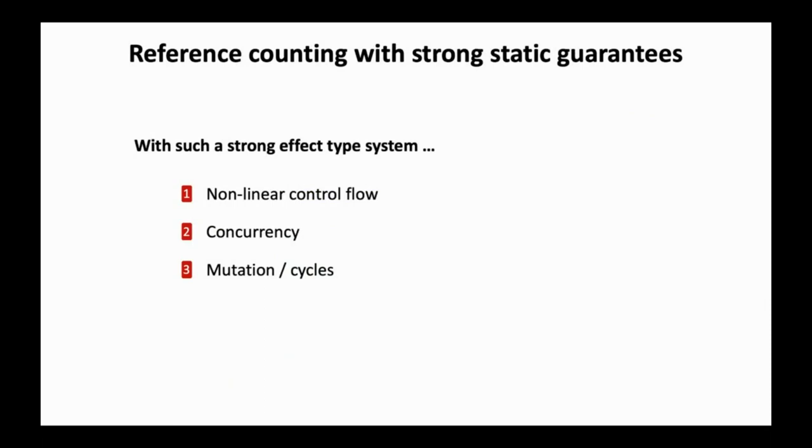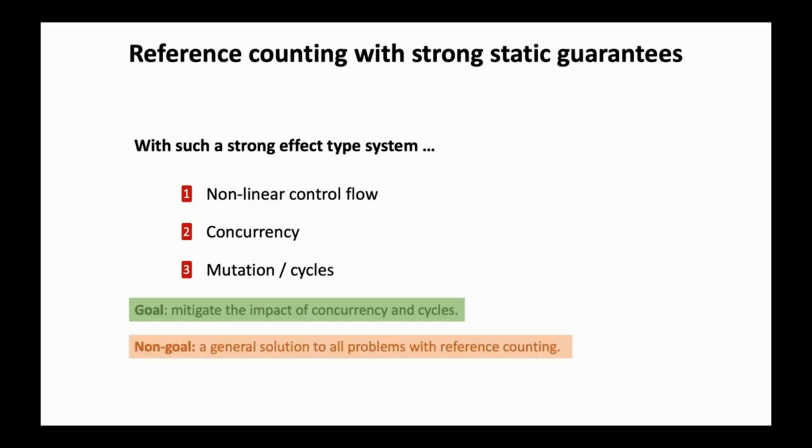Now we discuss how with such a strong effect type system, we can deal with other issues of reference counting. Here, we emphasize again that Perceus, precise reference counting is our main contribution. The strong effect type system helps mitigate the impact of concurrency and cycles. But this work does not yet present a general solution to all problems with reference counting, and future work is required to see, for example, how cycles can be handled more efficiently.